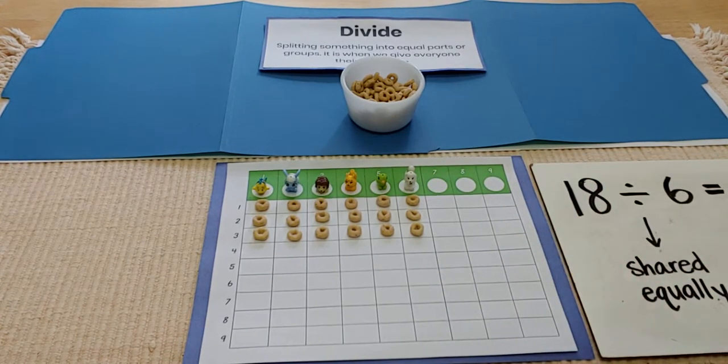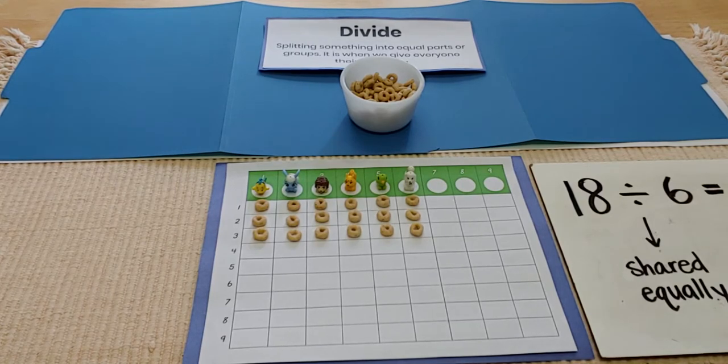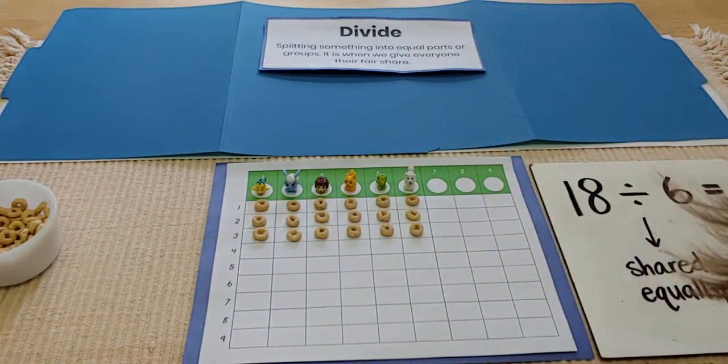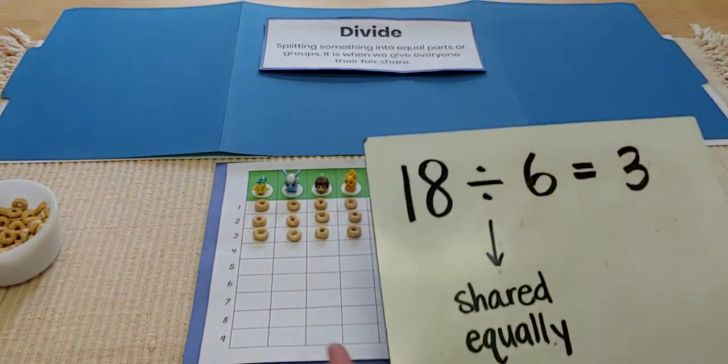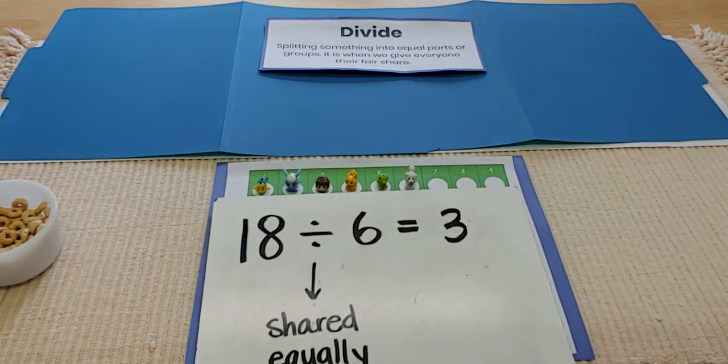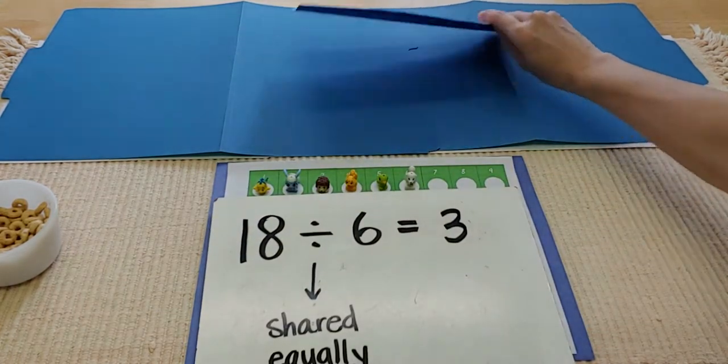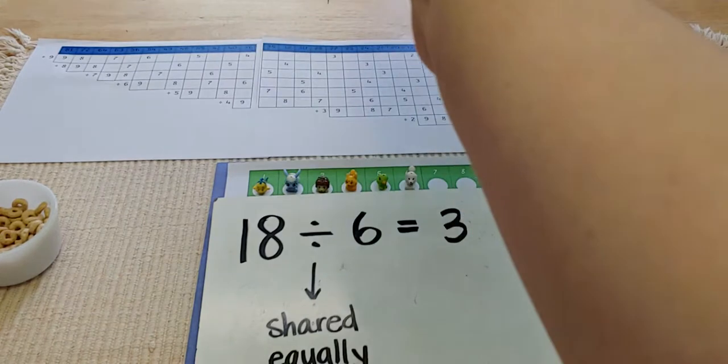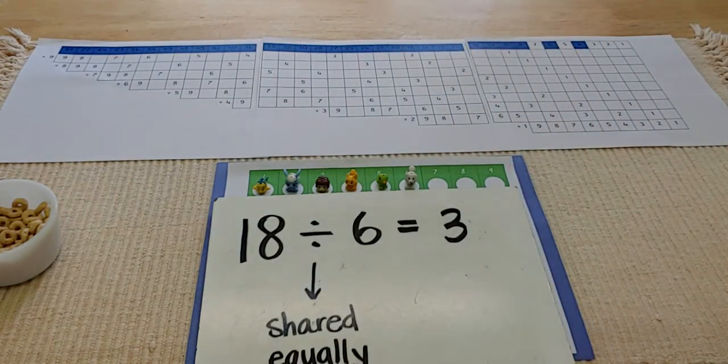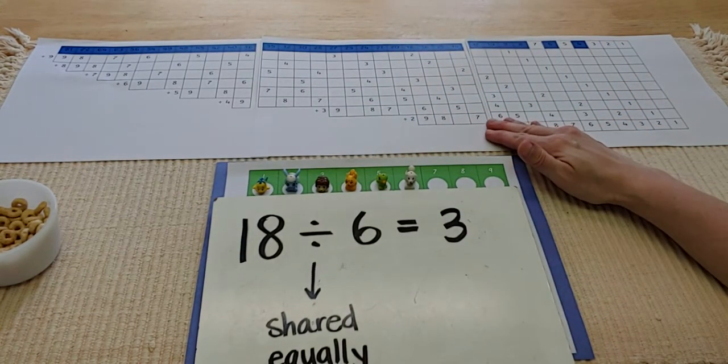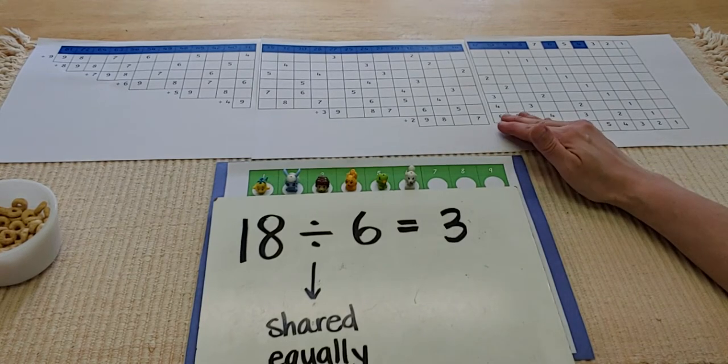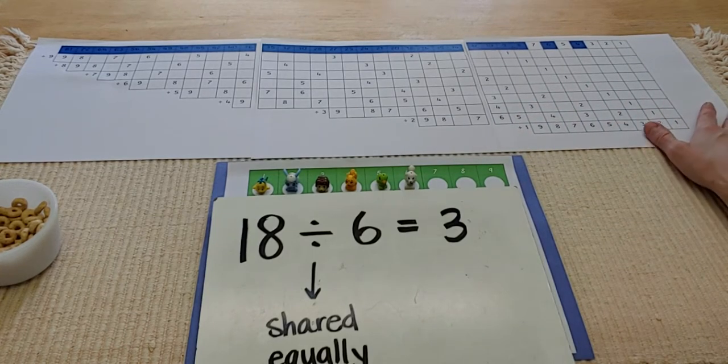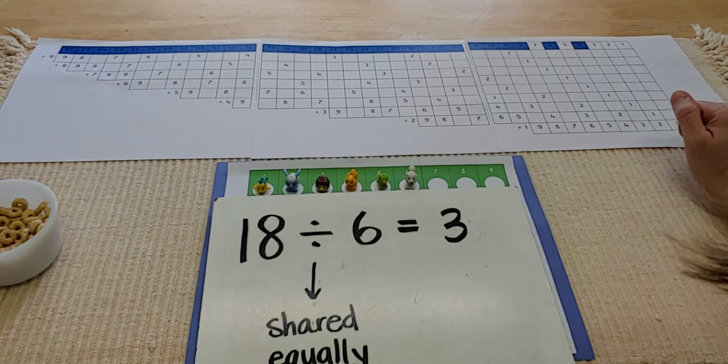Now, let's just pretend mom or dad or whoever is caring for you at home is busy working. And you're not sure. Did I get this problem right? I don't know. 18 divided by six? Well, here's what you can do. Under this blue folder, I've hidden something. It's a division finger board. And this has all the answers to the division problems. This is something you can print from our class site. Where to get one? I'll show you how to use that.